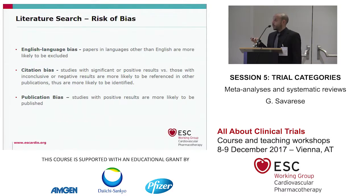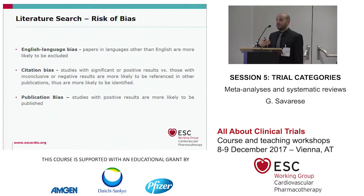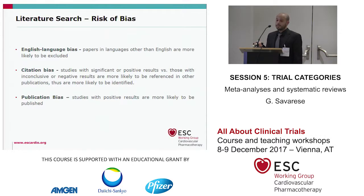In systematic reviews and meta-analyses, there is always a risk of bias. One of the most frequent biases is the English language bias, meaning papers published in English are more likely to be reported. If we want to perform a rigorous meta-analysis, we should also check sources in other languages and try to translate. The citation bias means papers that are more often cited are more likely to be included. And then there is a publication bias, meaning studies with positive results are more likely to be published, cited, and included in the meta-analysis.